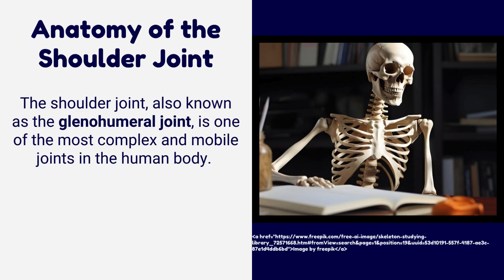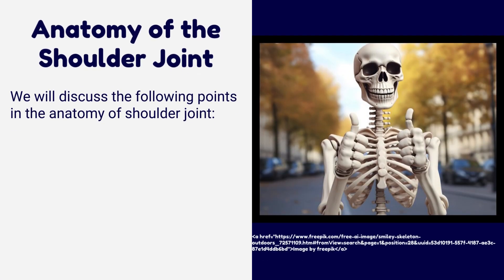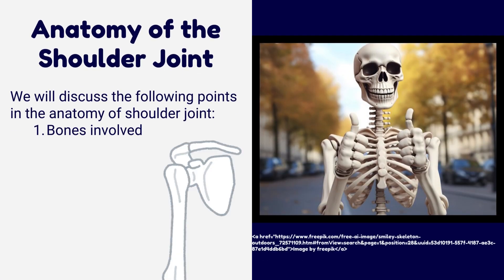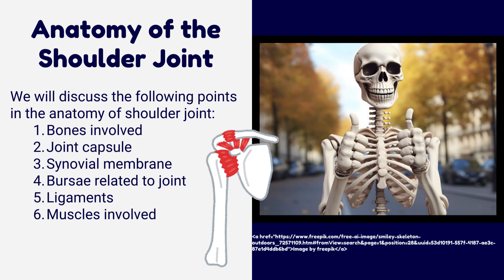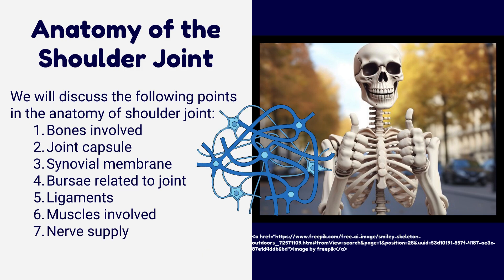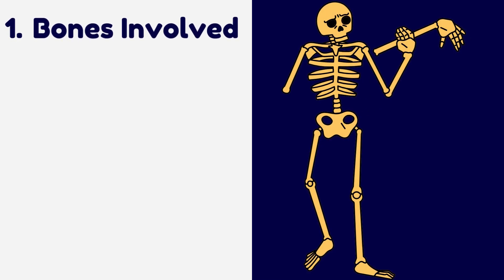The shoulder joint, also known as the glenohumeral joint, is one of the most complex and mobile joints in the human body. We will discuss the following points in the anatomy of the shoulder joint: bones involved, joint capsule, synovial membrane, bursae related to the joint, ligaments, muscles involved, nerve supply, and blood supply.